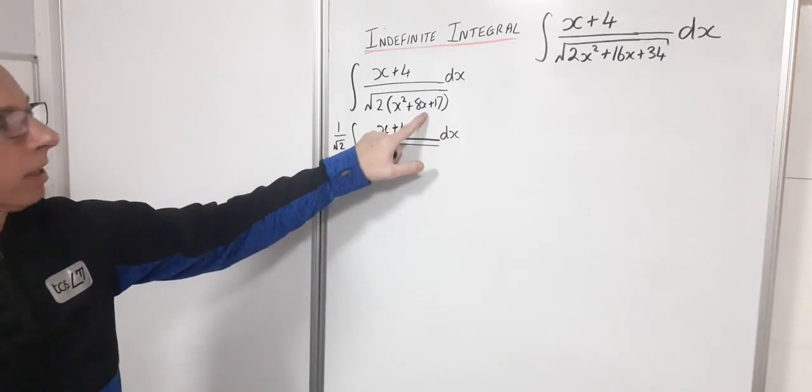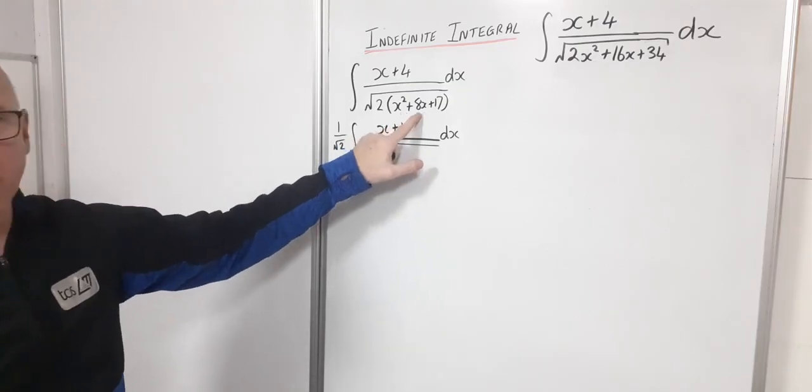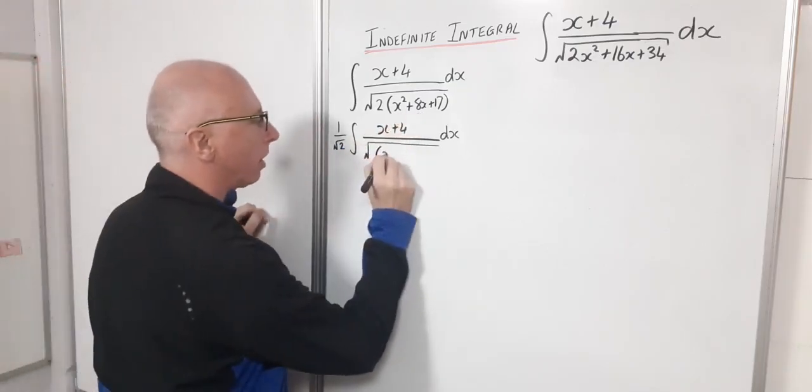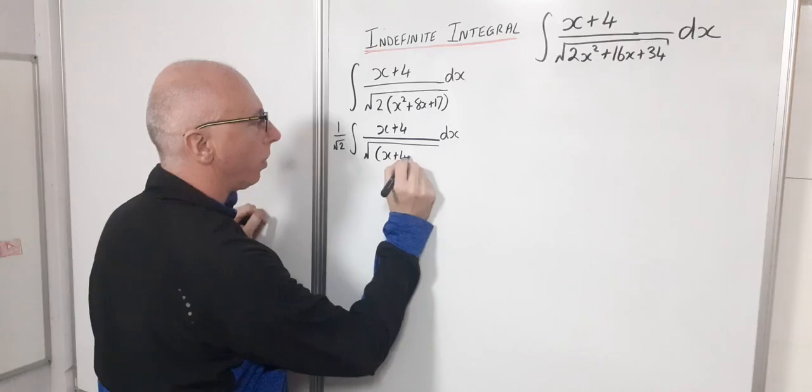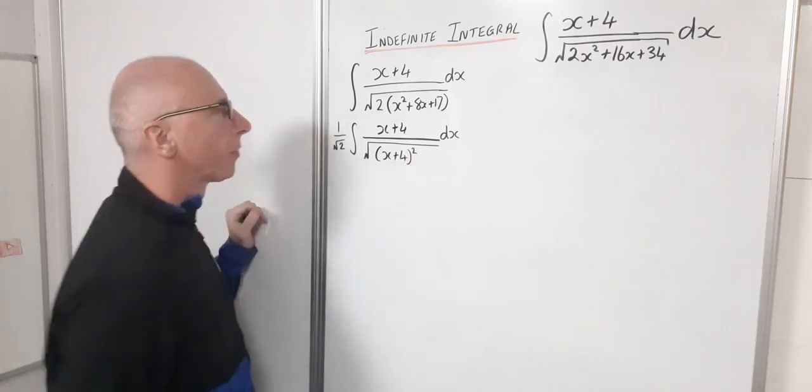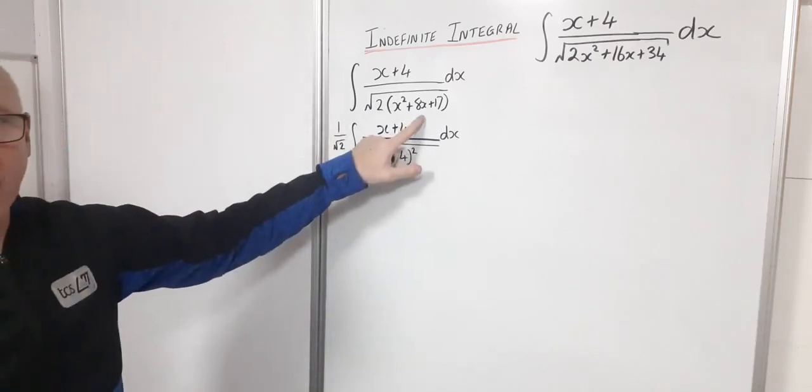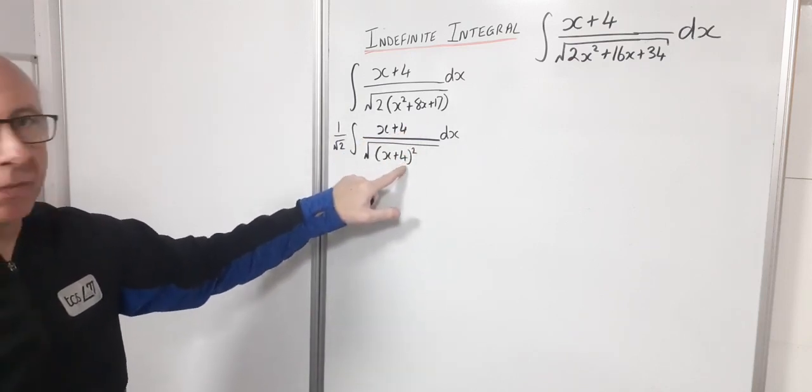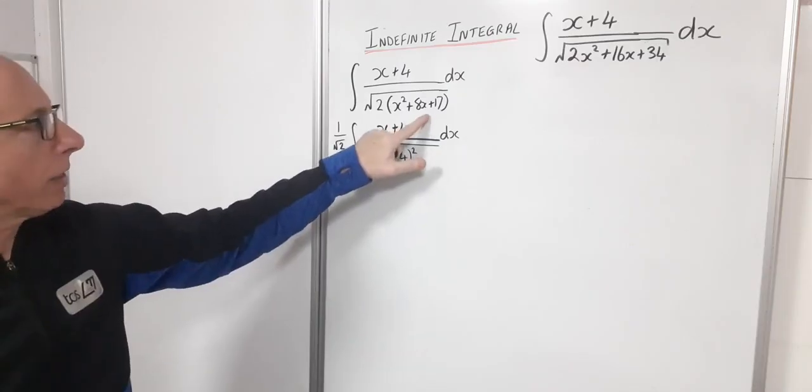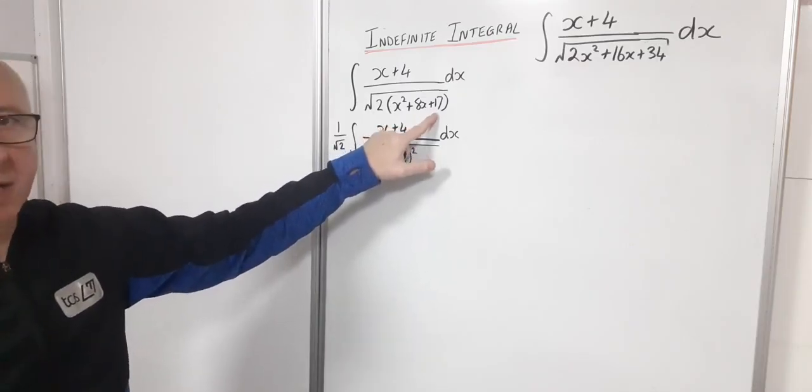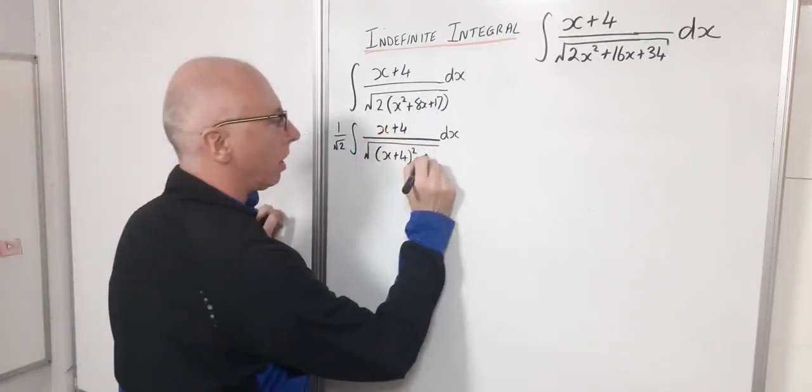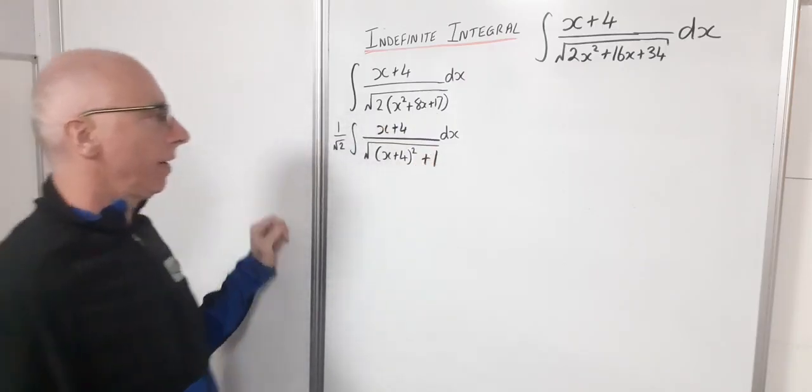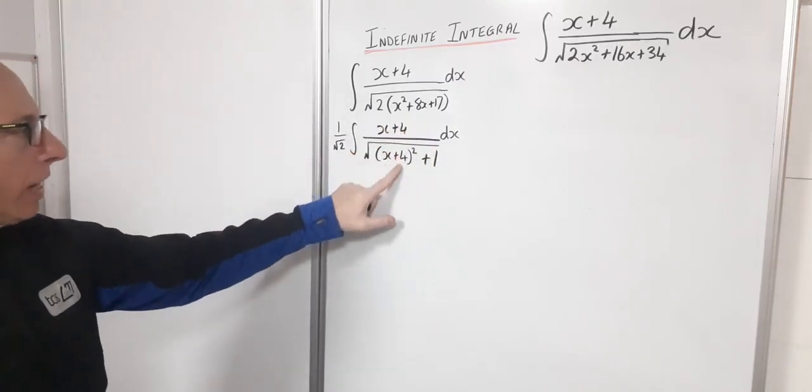Now let's take the square of this. So I'll have x plus 4 squared. And I'll have to now subtract 16 because I've got 4 times 4 is 16 here if I fold that one out. So subtracting 16 from here and adding 17 I'll have plus 1.